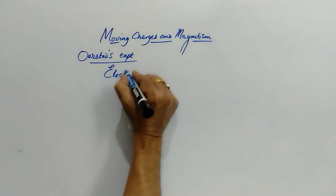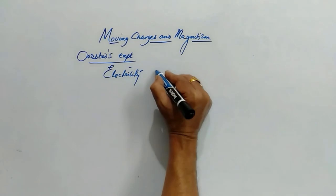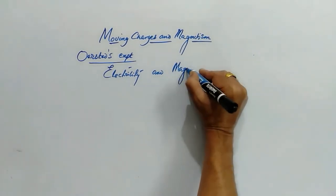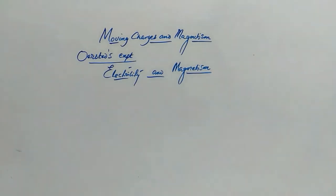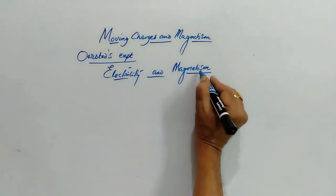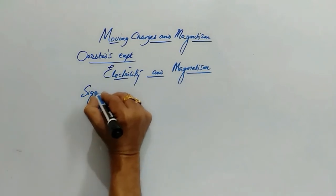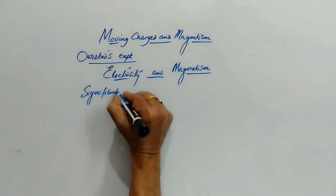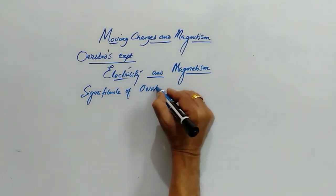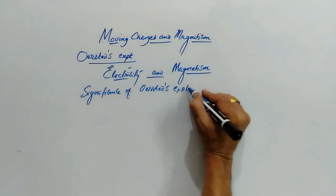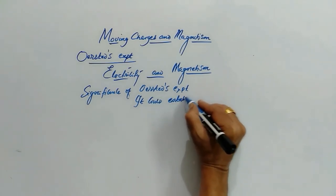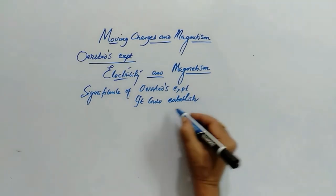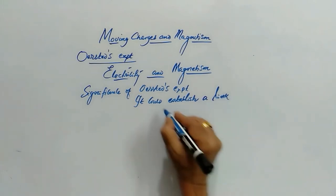Before that, we were studying electricity as a separate entity and magnetism as a separate branch of physics. But after this Oersted's experiment, we could establish a link between the electricity and magnetism. That was the significance of Oersted's experiment. What is the significance? It could establish a link between electricity and magnetism.